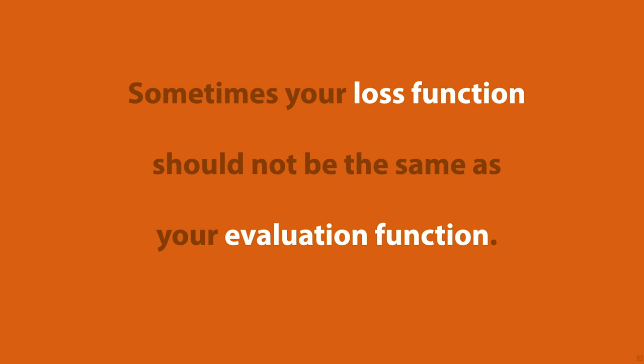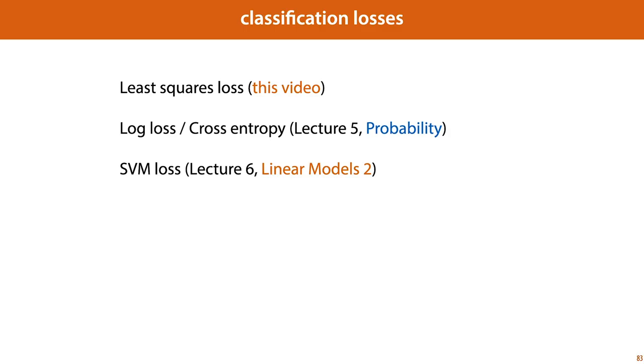Sometimes our loss function should not be the same as our evaluation function. And by evaluation function, we mean the function that we're actually interested in minimizing. Sometimes we can make that the same as our loss function, but sometimes we want to find a loss function that has a minimum at the same point as the evaluation function, but is actually smooth, so that it becomes easier to search.